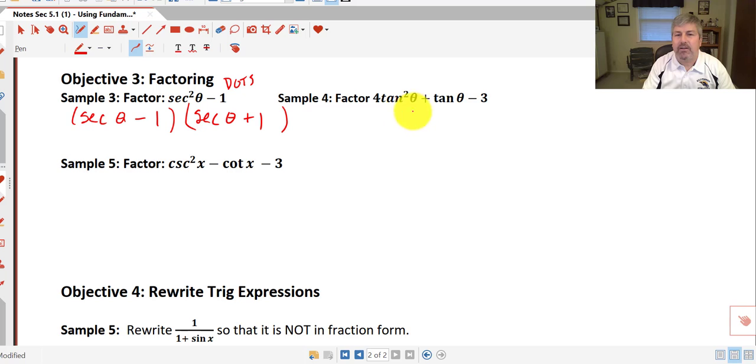Sample 4, we want to factor this one. Now, you could do substitution here. Some of you guys might like to do that. We've done that in the past. So we could substitute and do like a u substitution. I'm not going to do that. This one looks like it's pretty easy to factor. 4 tangent squared. I've got a couple options for that. That could be 2 tangent and 2 tangent or 4 tangent and 1 tangent.